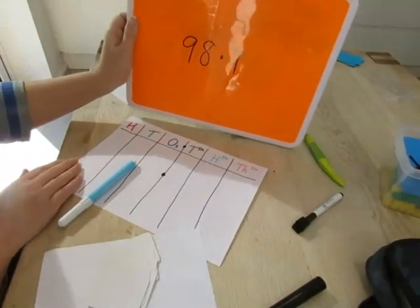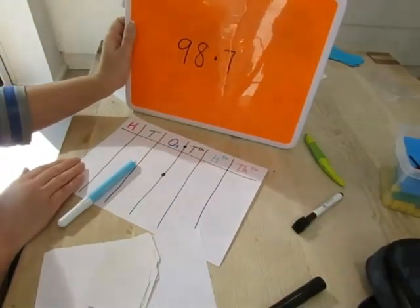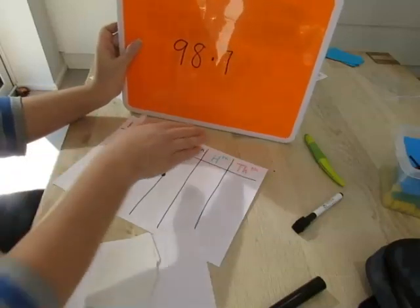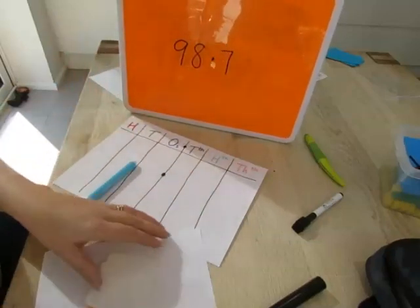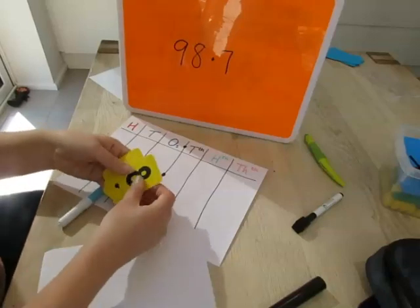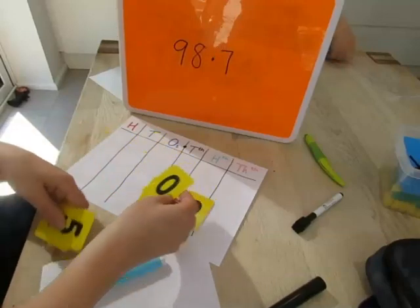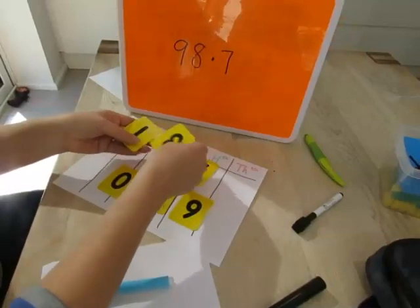So we now put our barrier up so I can't see Luke's place value chart and he can't see mine. Hopefully it's going to stand up. So I've got my six cards. Let's have a look at what I've got. Oh goody, I've got that one.